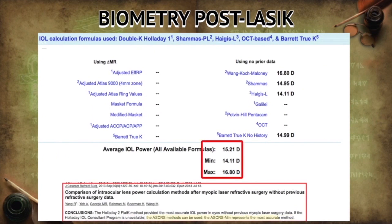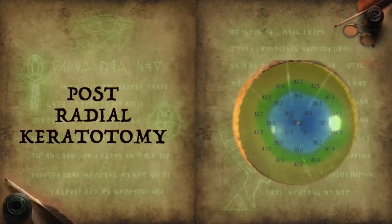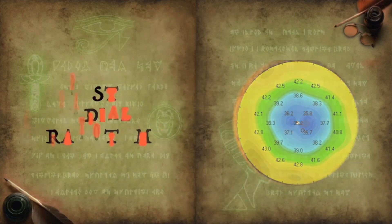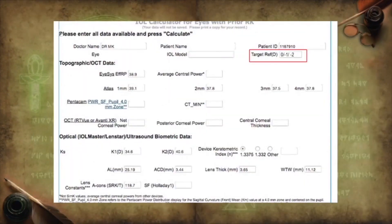After getting results, the minimum or average value should be considered in case of a post-myopic LASIK. In post-radial keratotomy, the target refraction should be kept at minus 1 or minus 2, depending on the cuts of the cornea.